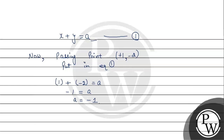So, again a ki value ko replace karnei in equation 1. Equation 1 becomes x plus y equals to minus 1. So, x plus y plus 1 equals to 0, which is the required equation of straight line.